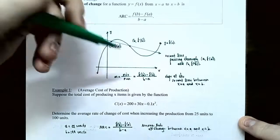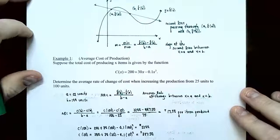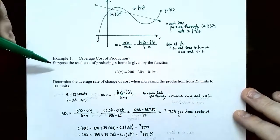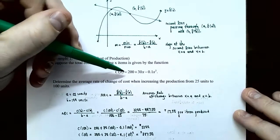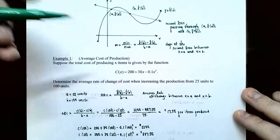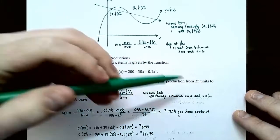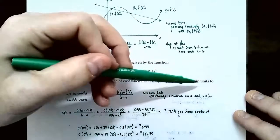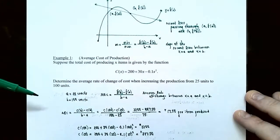Example one: average cost of production for a commodity. Suppose the total cost of producing x items is c of x equals 200 plus 30x minus 0.1x squared. Determine the average rate of change of cost when increasing production from 25 units to 100 units. We're looking at a closed interval starting at 25 units and going up to 100 units — how much does it cost on average to produce an additional item?